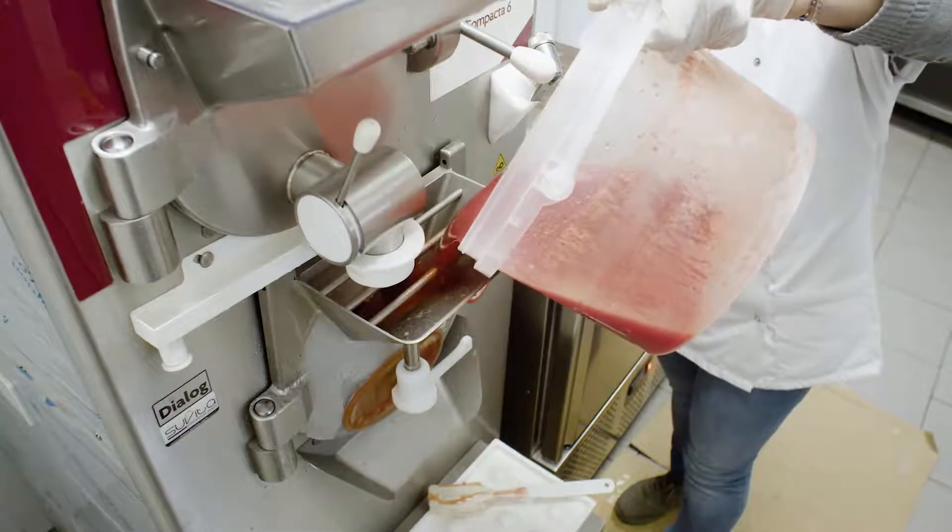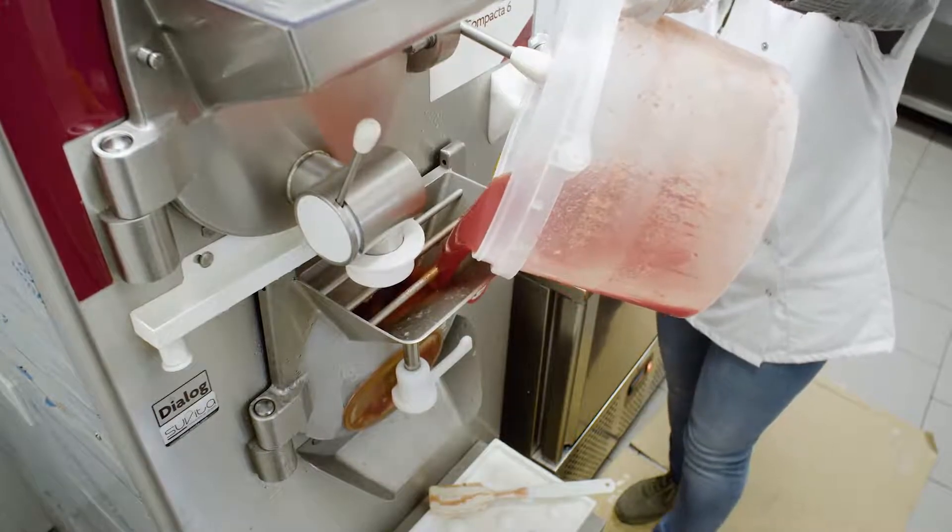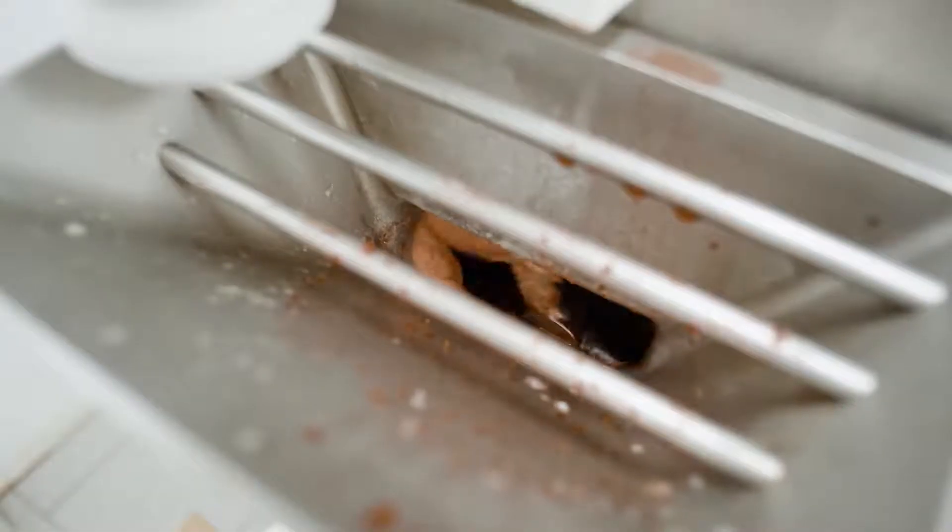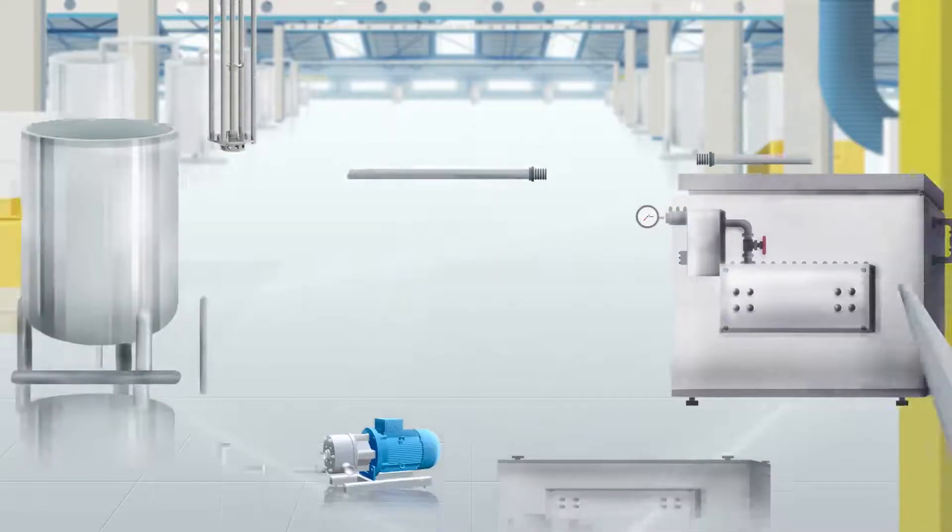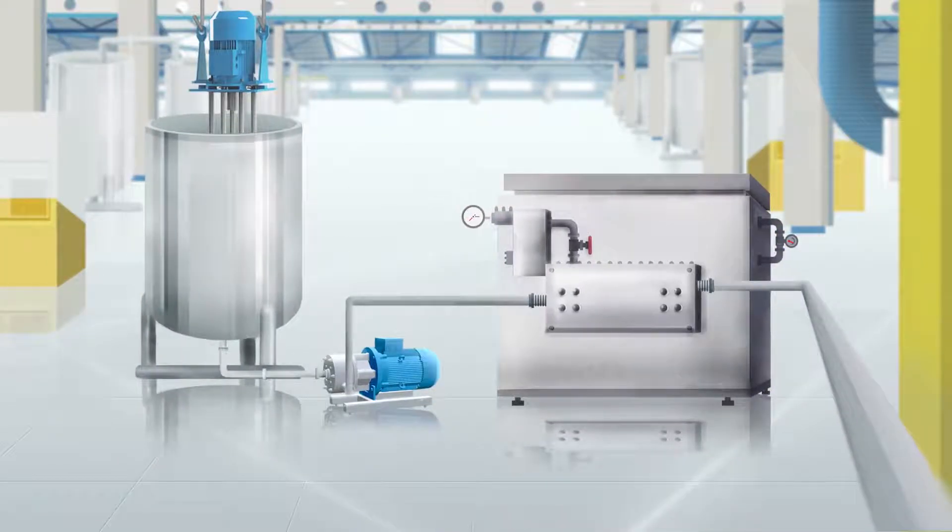Depending on the scale of manufacturing and recipe, this premix might then be chilled and churned whilst freezing. Alternatively, the premix may be subjected to further processing with a high-pressure homogenizer to obtain the smallest possible droplet size.